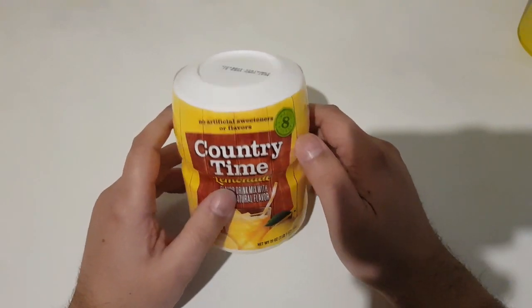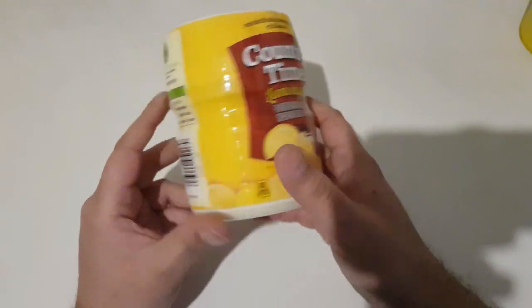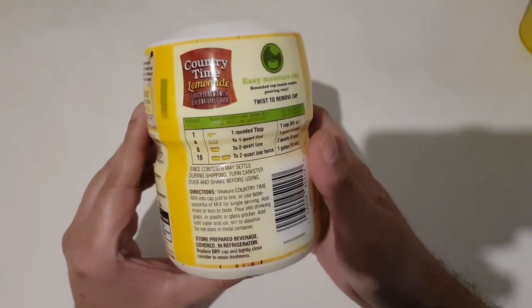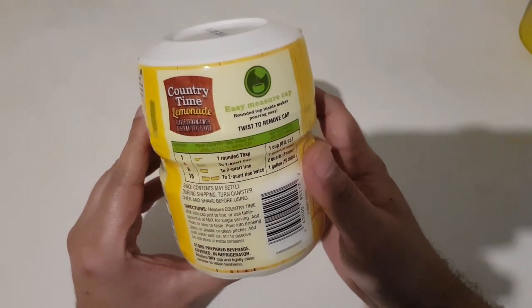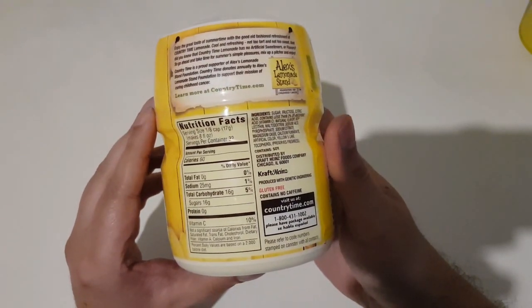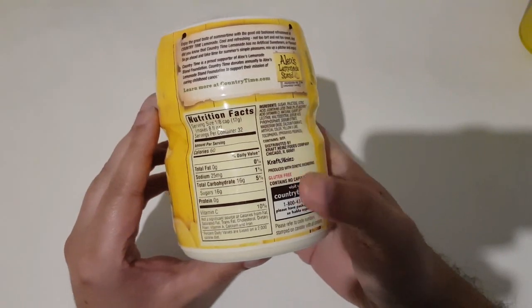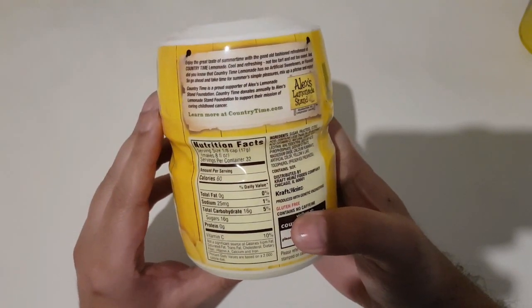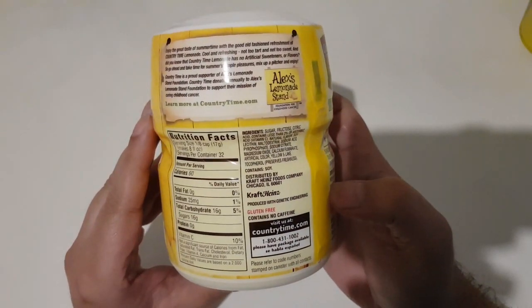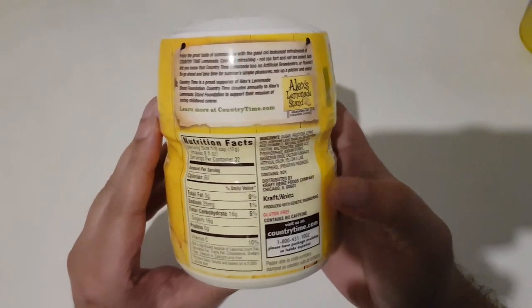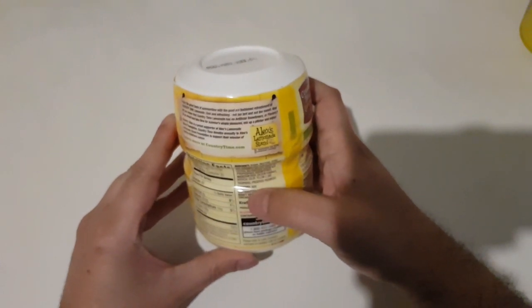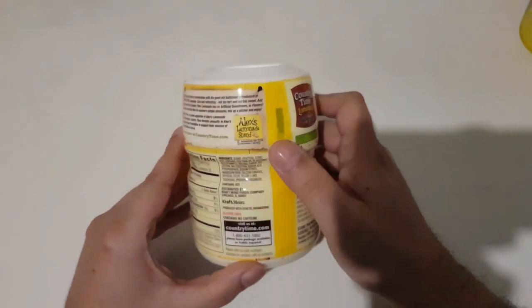It says twist to remove cap and there's a measuring cup inside. It contains no caffeine, has 10% vitamin C. Ingredients - of course sugar, all the sugar in the world is inside it. This is made by Kraft Heinz, this company is everywhere.